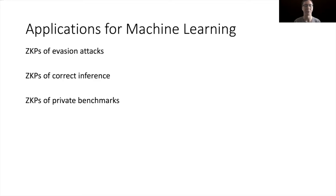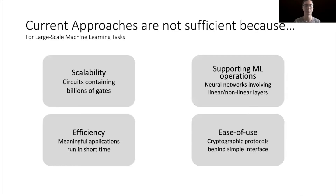Besides evasion attacks, we can also use zero-knowledge proofs to prove correct inference and private benchmarks. However, current approaches are not sufficient for this kind of applications, especially for large-scale machine learning tasks.